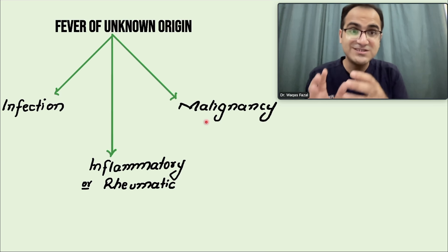Another very important step is to stop all drugs the patient is taking — even antipyretics. Stop steroids, stop antipyretics, stop all antibiotics, stop every medication for at least 72 hours. This is to exclude drug fever. If there is no fever after 72 hours, one of those drugs was causing it.